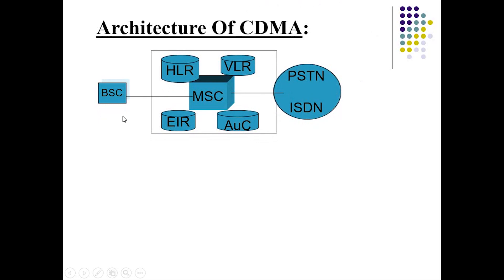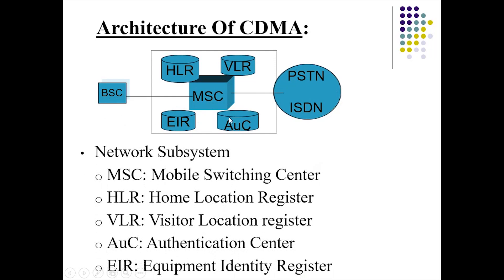Here we see a graphical representation of BSC architecture, where the BSC is connected to the MSC. The network subsystem includes: MSC — mobile switching center; HLR — home location register; VLR — visitor location register; AUC — authentication center; and EIR — equipment identity register.